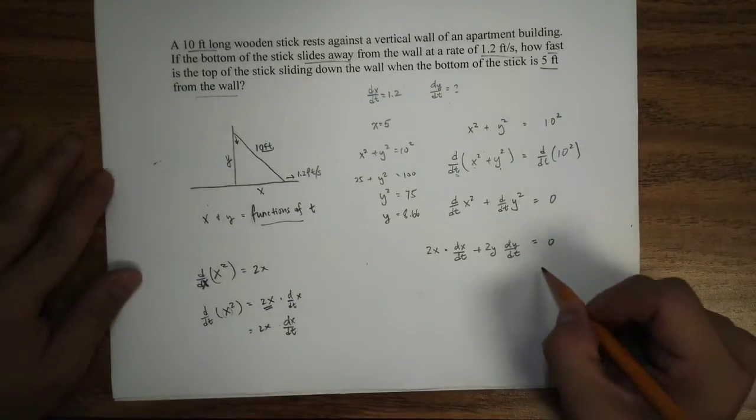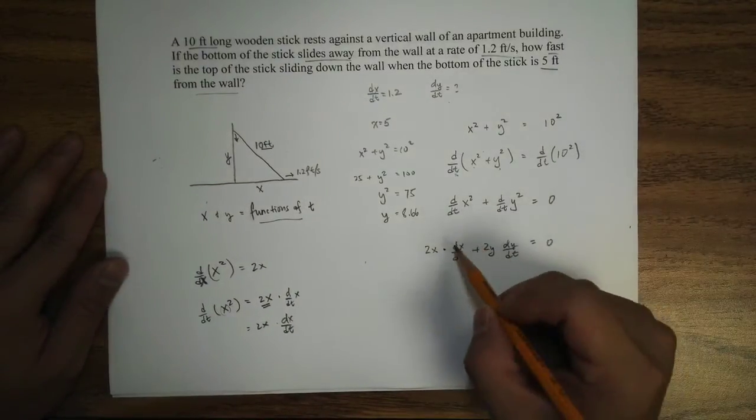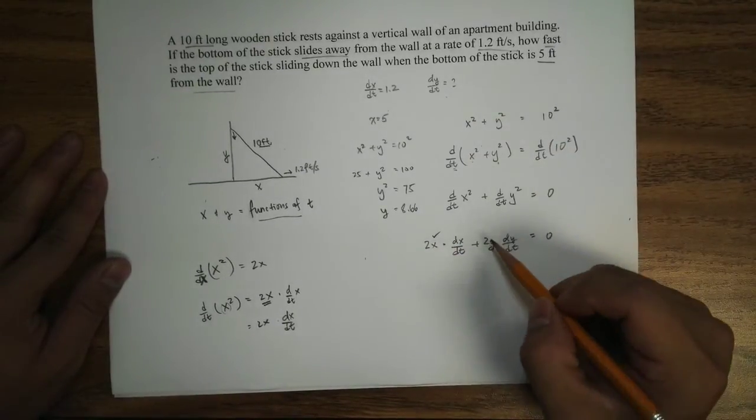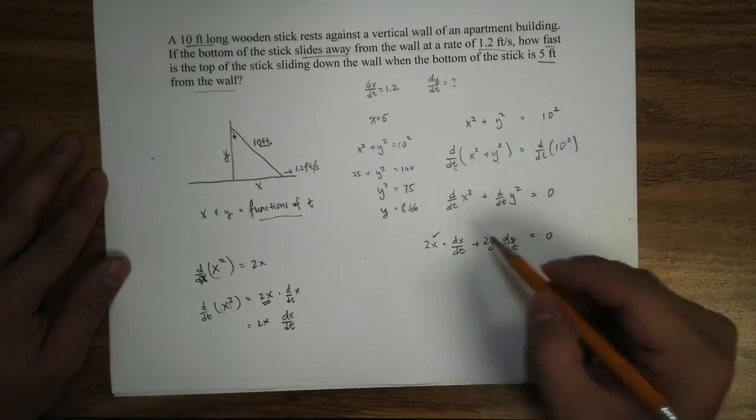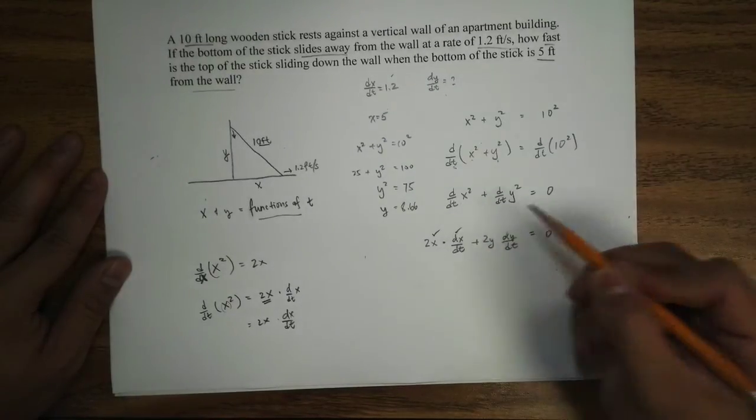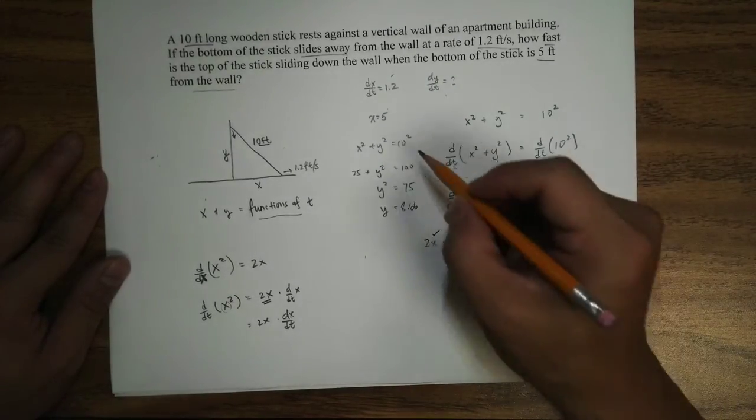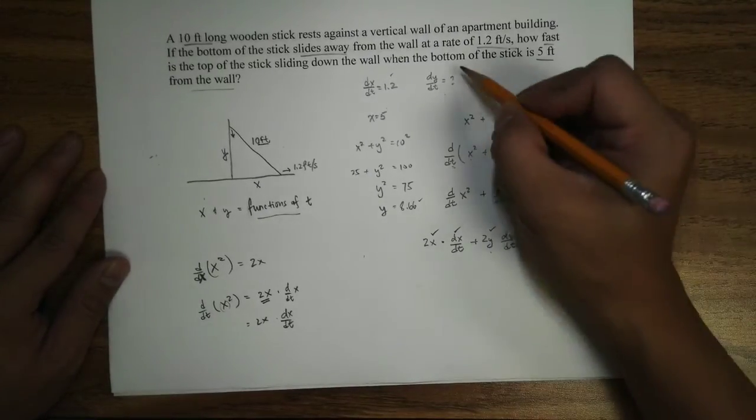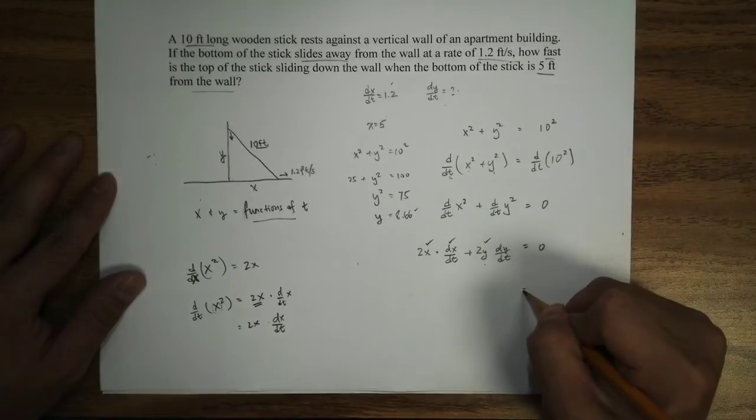Now, let's go back to here. Do we have X? Yes, X is given. Do we have dx/dt? Yes, it is given. Do we have Y? Yes, we calculated it. Do we have dy/dt? No, because that's exactly the thing we want to find out. So, we'll just go ahead and substitute numbers.